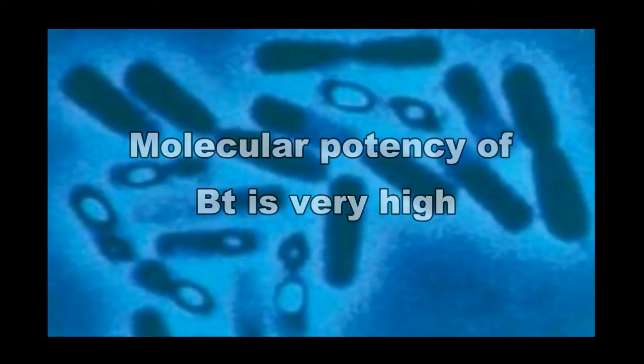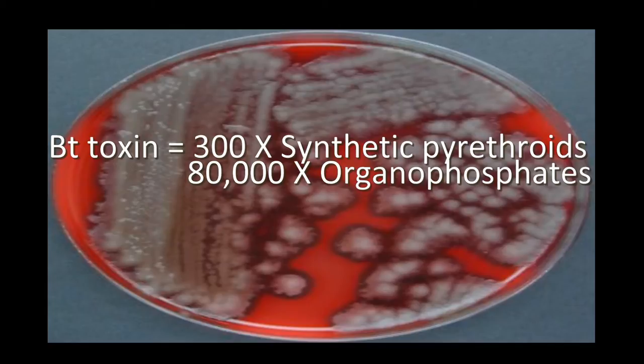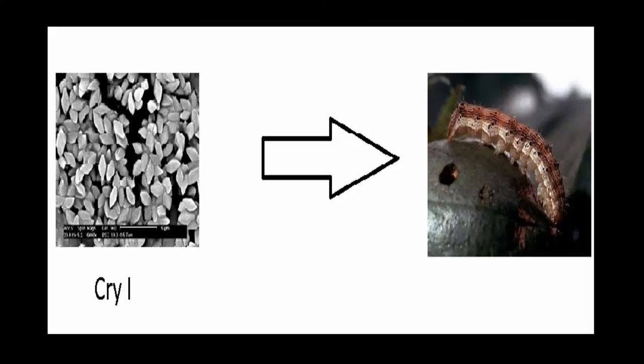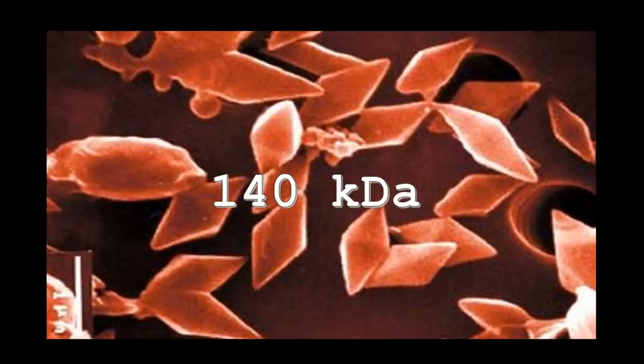There are several types of cry toxin with diverse host strains. The molecular potency of Bt toxin is very high — it is 300 times stronger than synthetic pyrethroids and 80,000 times stronger than organic phosphate. Among the numerous types of crystal endotoxins, the major one is the Cry1 endotoxin, which is specific to lepidopteran larvae. The shape of the crystal is bipyramidal and the toxin is about 140 kD.